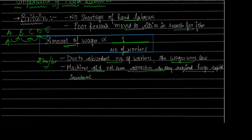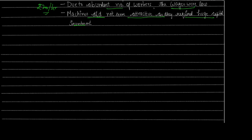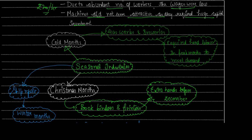There were also seasonal industries — industries that did not run throughout the year but only in specific seasons. Labor demand in these industries was also seasonal. For example, in cold months, gas works and breweries were especially busy: breweries produced alcohol consumed in cold months for warmth, and gas works and heaters saw peak manufacturing demand in cold months, requiring extra hand labor.